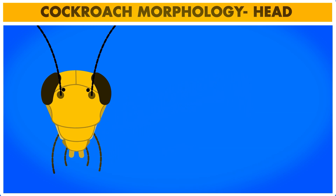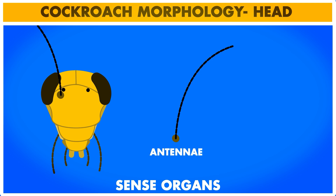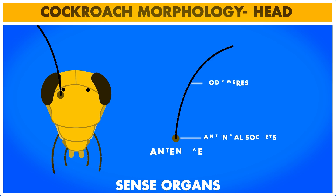The head also bears numerous sense organs. A pair of long and multi-segmented antennae are present just inner to the eye. The antennae arise from the antennal sockets and each segment of the antennae is called a podomere. The antennae bear tactile, thermal, as well as olfactory receptors, which help the cockroach in monitoring its surroundings.